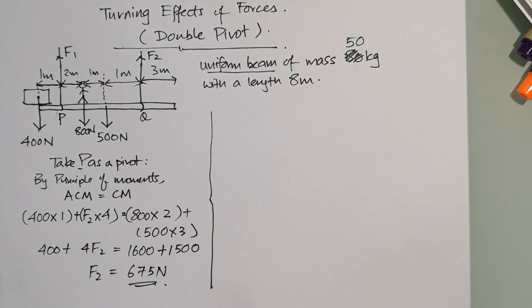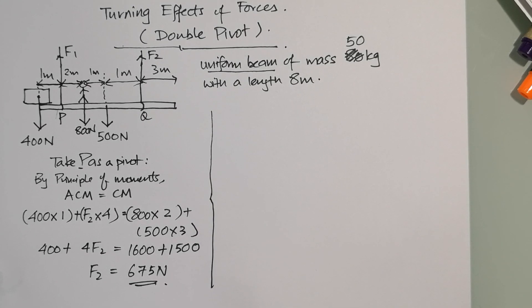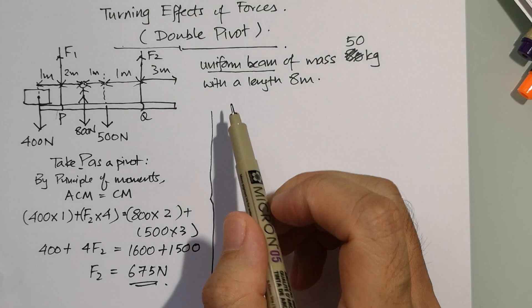On the other side, what do you do? Now you take Q as a pivot. Once you take Q as a pivot, many things will change. You have to really consider again where are the anti-clockwise moments and clockwise moments.